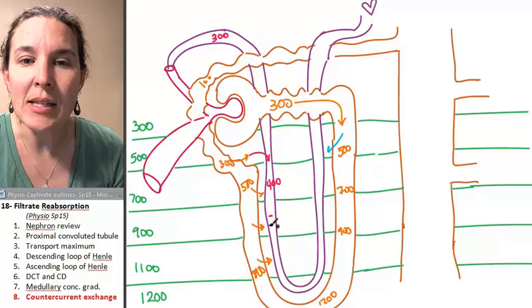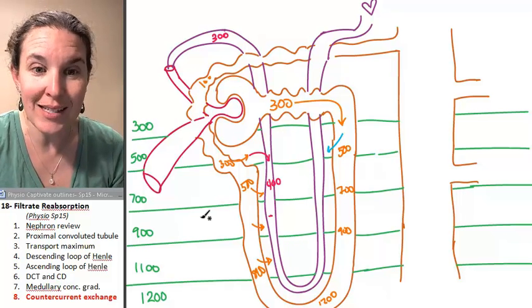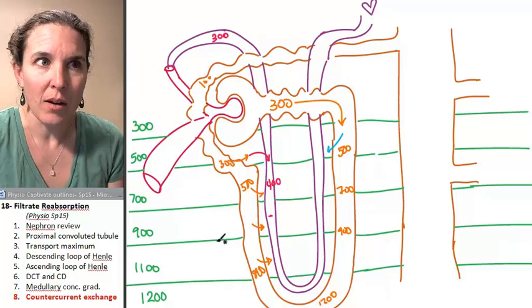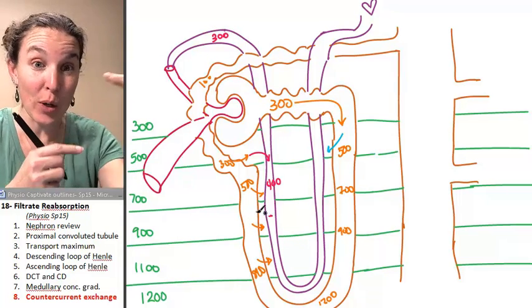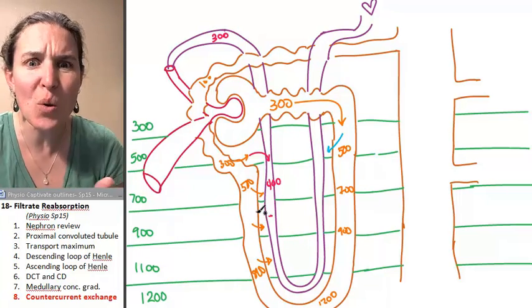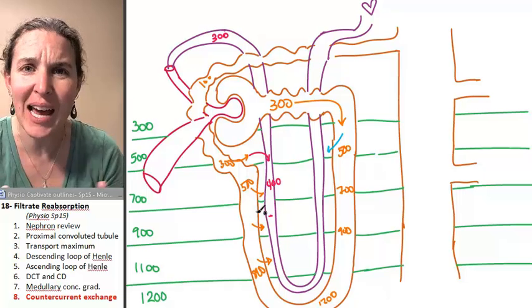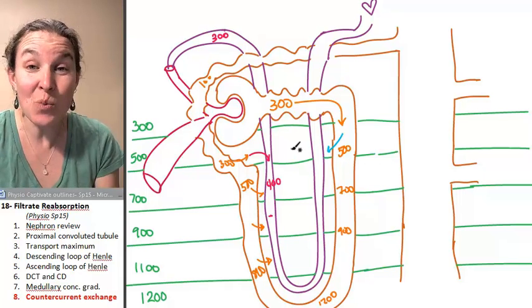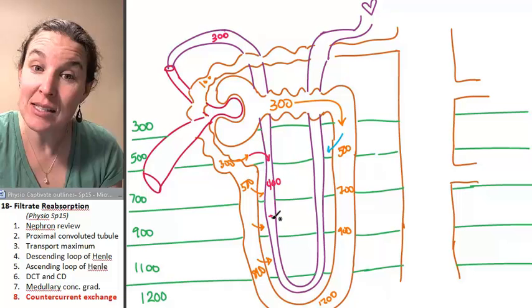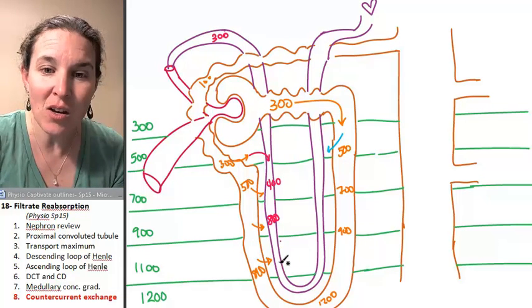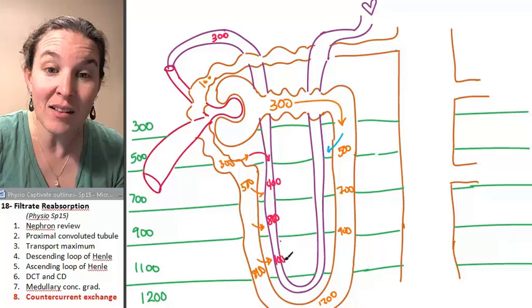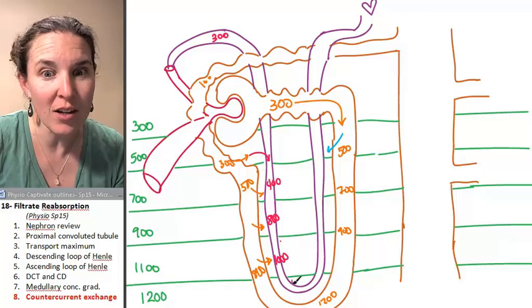What happens if the blood picks up the solutes and takes it out of the interstitial fluid? We now don't have that 200 gradient anymore. So we just pump more solutes out. So this is really a pretty endless situation where we can continue to pick up solutes until literally we reach 1,200.